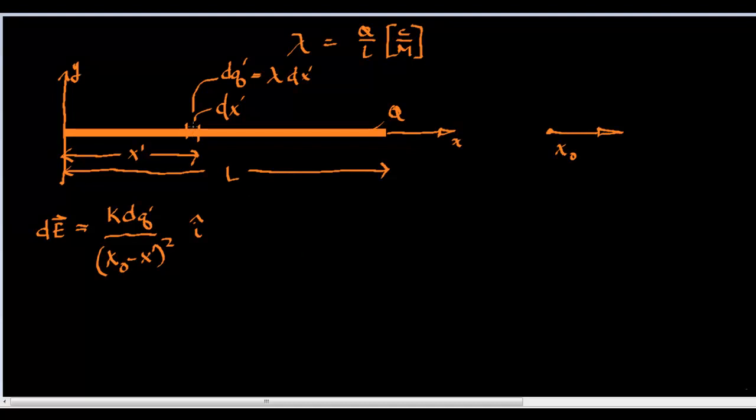So now we want to figure out how to sum up every little slice that we could possibly come up with along this line L. So, we're going to use integration. We're going to integrate from zero to L.